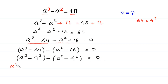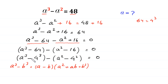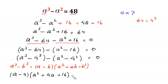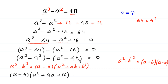Using the algebraic identity a cubed minus b cubed equals (a minus b)(a squared plus ab plus b squared), we factorize a cubed minus 4 cubed as (a minus 4)(a squared plus 4a plus 16). Then using a squared minus b squared equals (a plus b)(a minus b), we factorize a squared minus 4 squared as (a plus 4)(a minus 4). Setting the full expression equal to 0.